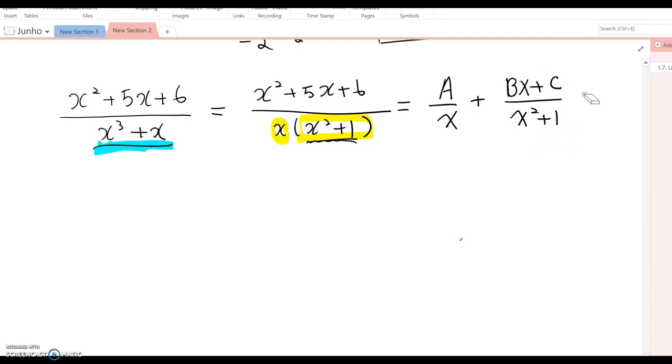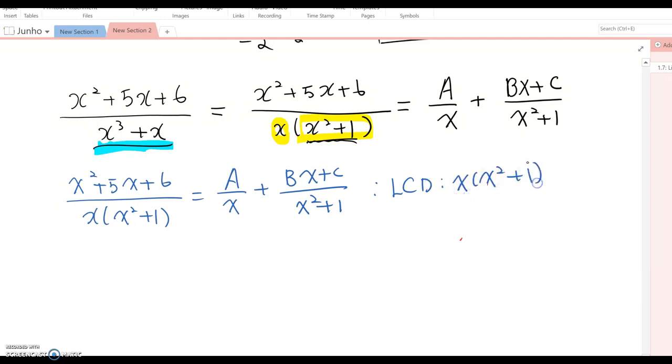So now I want to set up this one as x squared plus 5x plus 6 over x times x squared plus 1 equal to A over x plus bx plus c over x squared plus 1, and we need to find the LCD. So LCD becomes x times x squared plus 1.